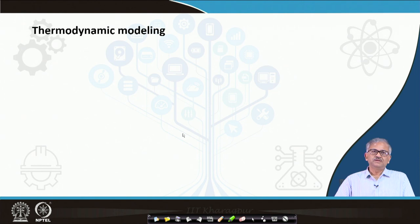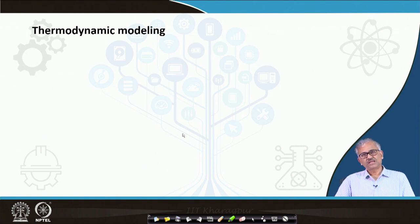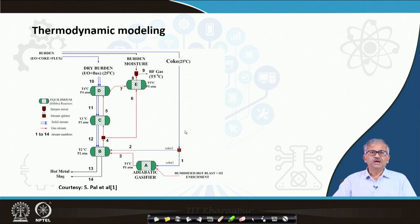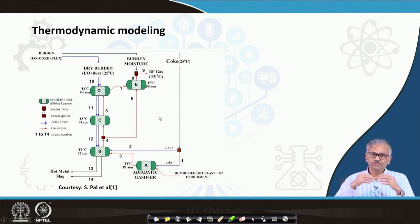Otherwise, as I said, the thermodynamic model does not capture transient phenomena. During the actual process, whether the phases attain thermal equilibrium or not — in some cases thermal equilibrium is not attained — but it can only calculate: if it attains equilibrium, what will be the final composition. Now I will talk about an example of a multi-zone thermodynamic model of the blast furnace, where you conceive it as a number of equilibrium reactors.